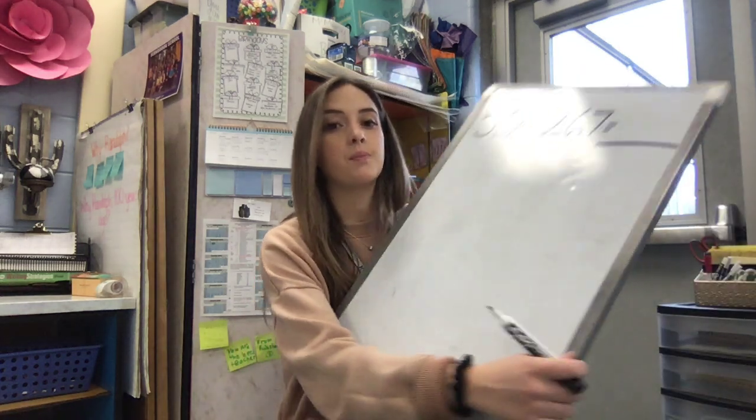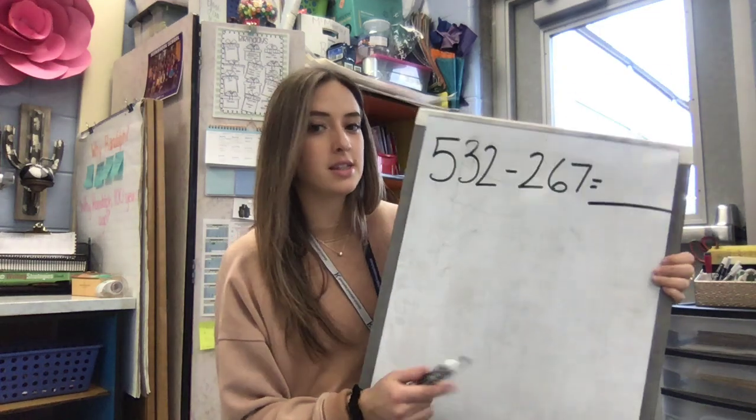Okay, second graders. So we are on to three-digit subtraction. This is a really big deal, and you guys have been doing an awesome job with it. So we know our two strategies so far. We know our open number line strategy, and now we're going to use our draw and subtract strategy with three-digit numbers. It's the same thing, just with three digits. So let's start off the exact same way.